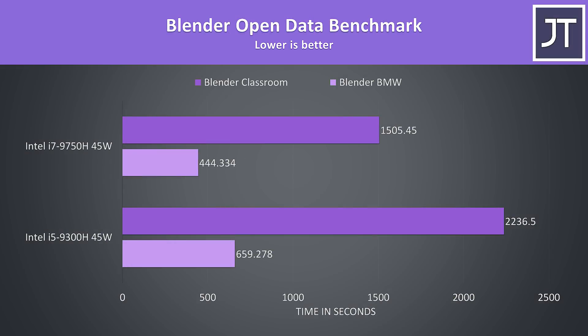I've run the BMW and Classroom benchmarks with Blender, and this is another test which benefits from additional cores, so it's no surprise that the i7 is coming out ahead here. The i7 completes both tasks around 48% faster at the stock 45 watt limit, so pretty good scaling given the 50% core increase with the i7.